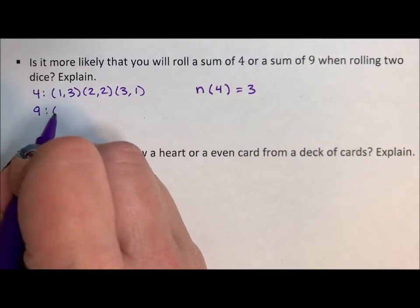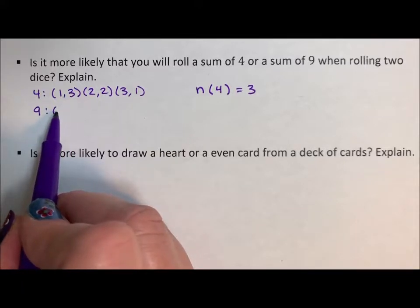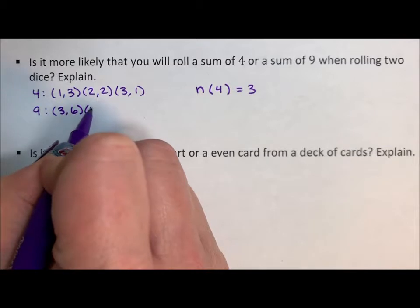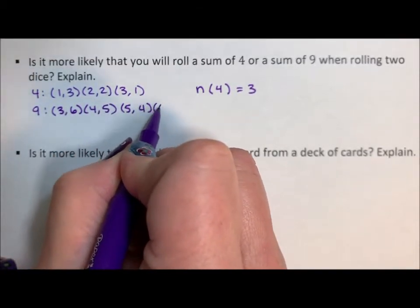For rolling a nine, well, I can't have a one because one and six is only seven. I can't have a two. I can't have a three. So three and six, four and five, five and four, six and three.